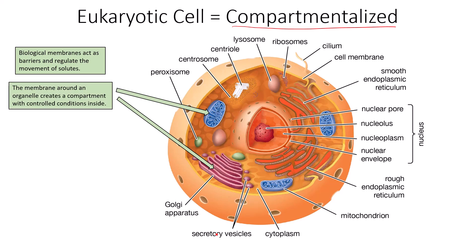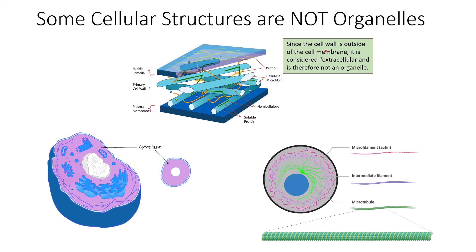In order to maximize efficiency, eukaryotic cells need individual sections within the cell for metabolic processes to take place. Biological membranes act as barriers and regulate the movement of solutes; the membrane around an organelle creates a compartment with controlled conditions inside. The mitochondria produces ATP, the energy source for eukaryotic cells. Contrasting the function of the mitochondria with the Golgi apparatus shows completely different function and structure, but both have a membrane keeping their particular enzymatic reactions compartmentalized.